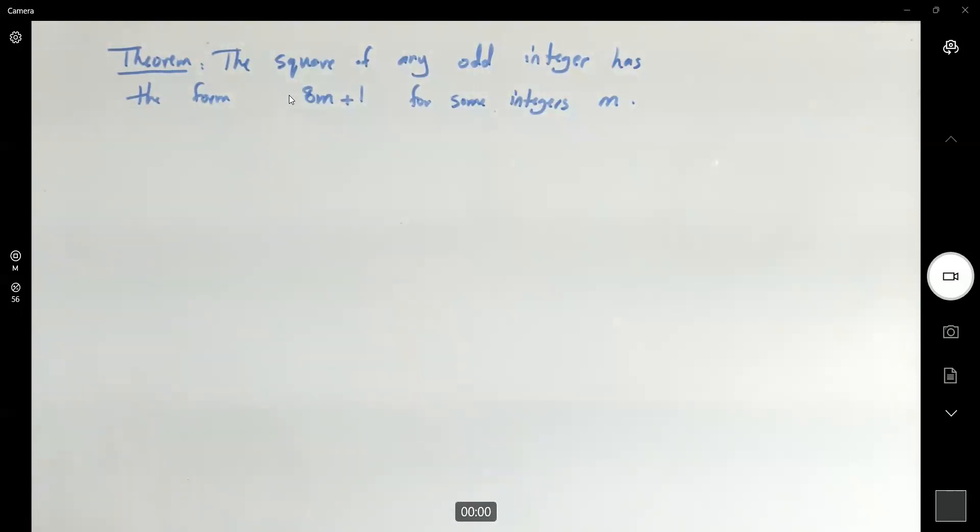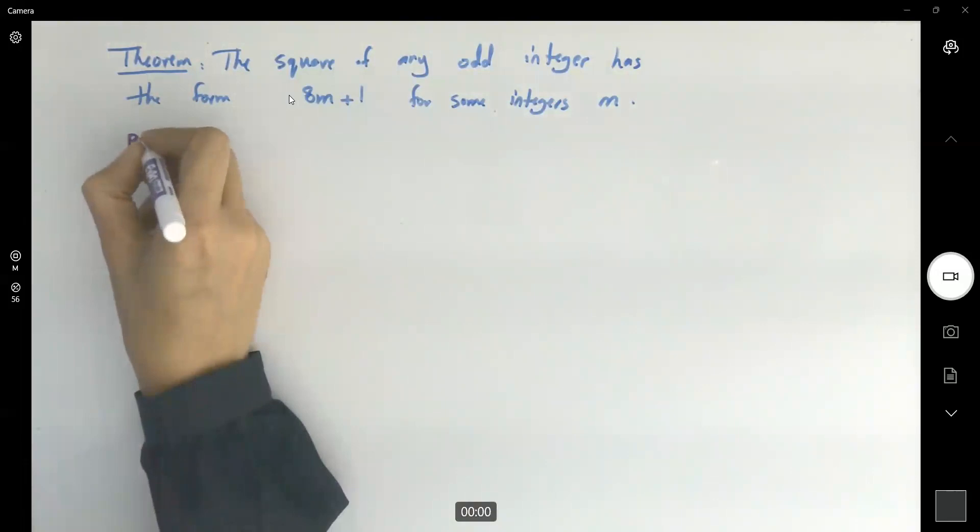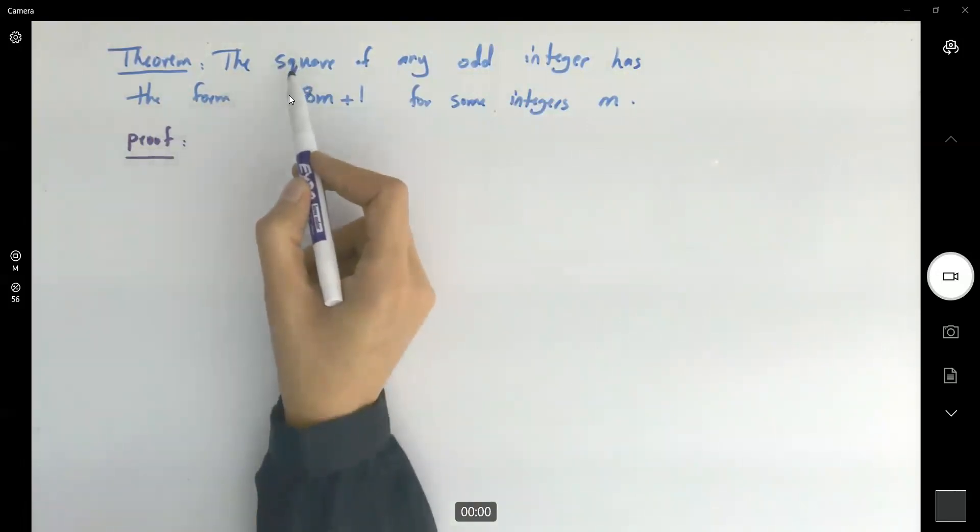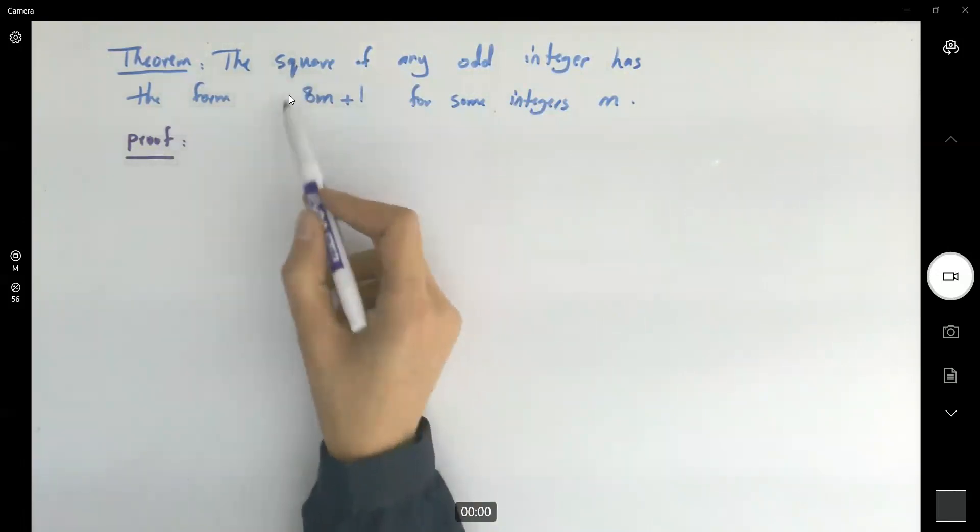So how do I prove this? What are the steps in proving this theorem? We're going to use the partition for an integer and square that integer and show that after simplification it must be of the form 8m plus 1.